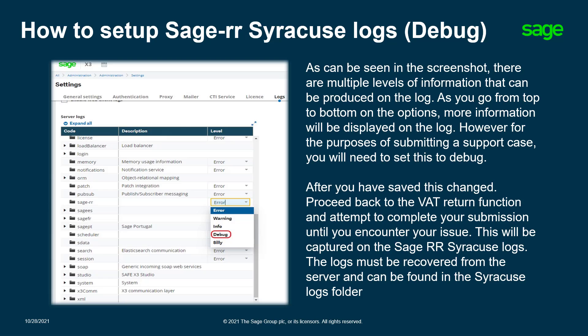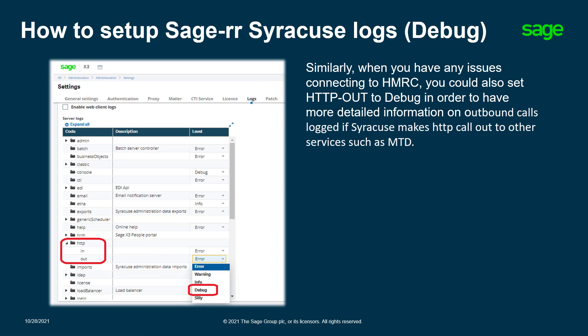After you have saved this change, proceed back to the VAT return function and attempt to complete your submission until you encounter your issue. This will be captured on the Sage RR Syracuse Logs which can be recovered from the server. If you are experiencing issues connecting to HMRC, while you are still in the Global Settings, it would be useful to turn the HTTP out to Debug. This will provide more detailed information on the outbound calls logged when Syracuse makes HTTP callout to other services such as MTD.